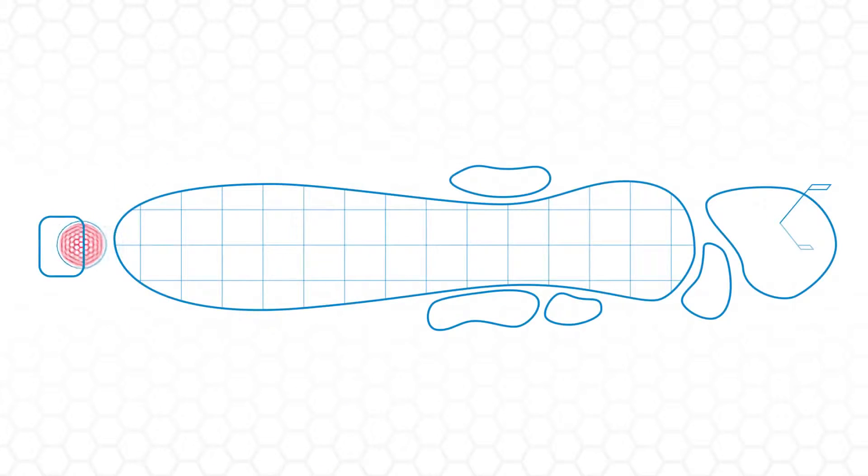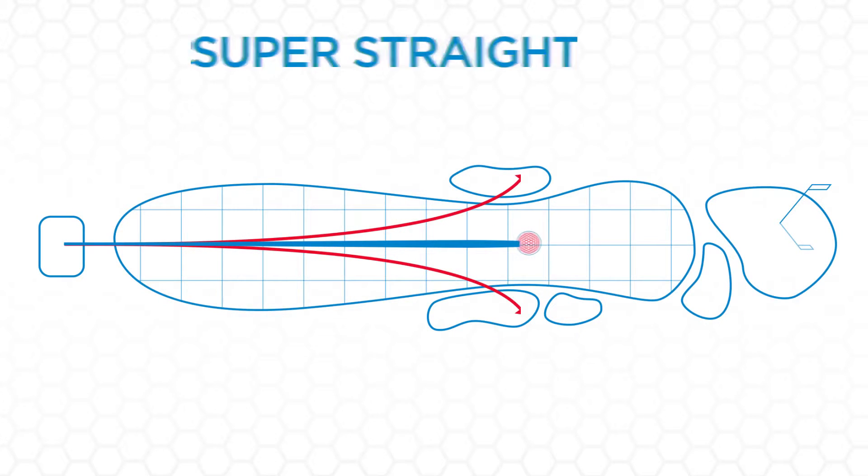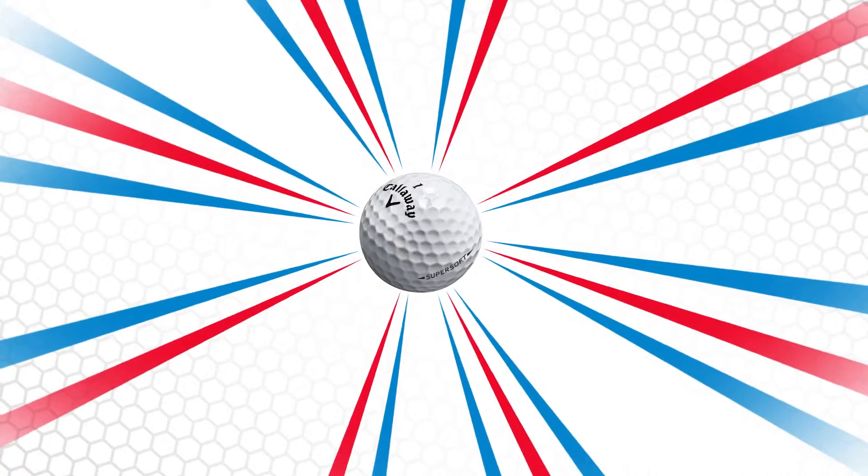Reduced driver spin also helps with your dispersion, so just lower backspin in general is going to create less side spin as well. So the big slices that golfers generally hit are going to be reduced and it's going to be much straighter.